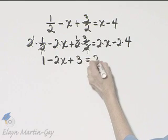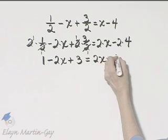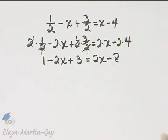is equal to 2 times x, which is 2x, minus 2 times 4, or 8. If you multiply through correctly by the correct LCD, your equation will be equivalent, but will no longer have fractions.